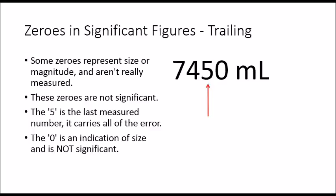The zero that comes after it is not significant. The 5 here is where our measurement really stops, and the zero just shows us how large our measurement is. So there are only 3 significant figures in this number.